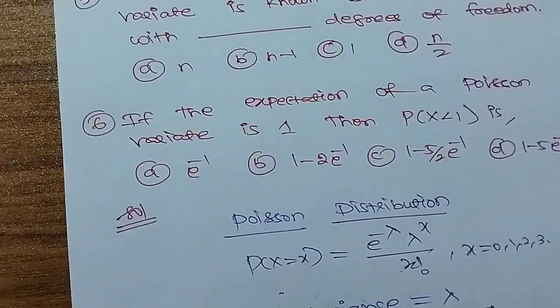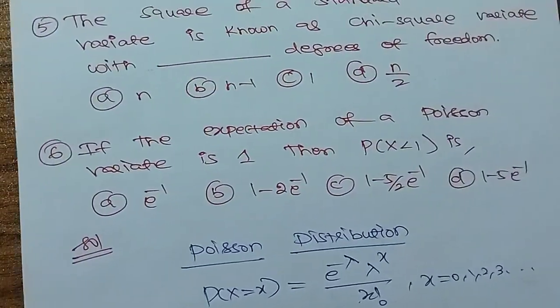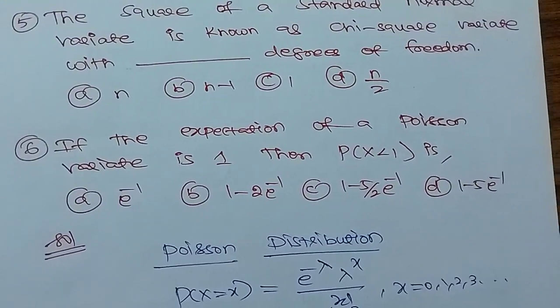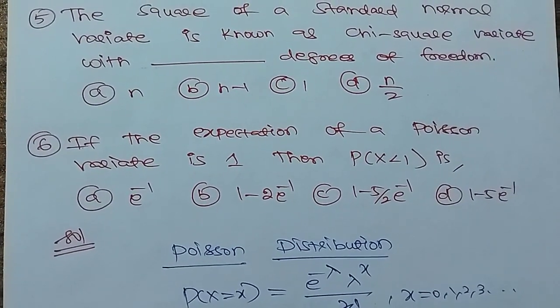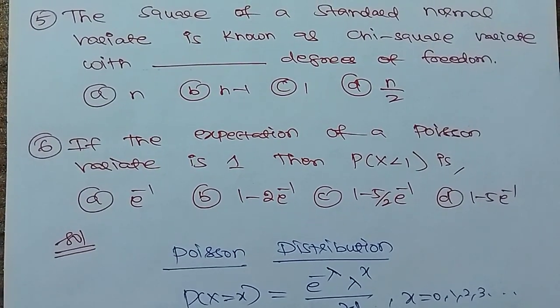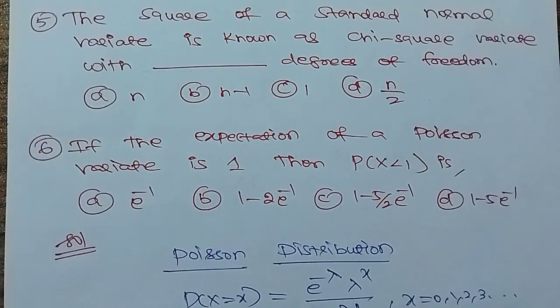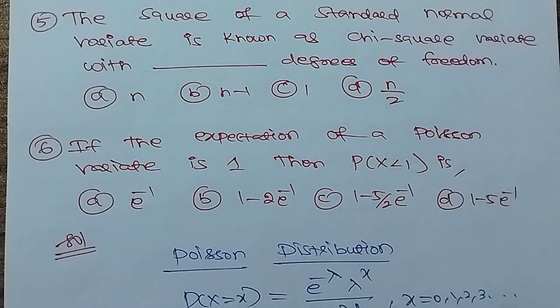Question number 5: The square of a standard normal variate follows a chi-square distribution. This is a very standard probability distribution question in the exam.